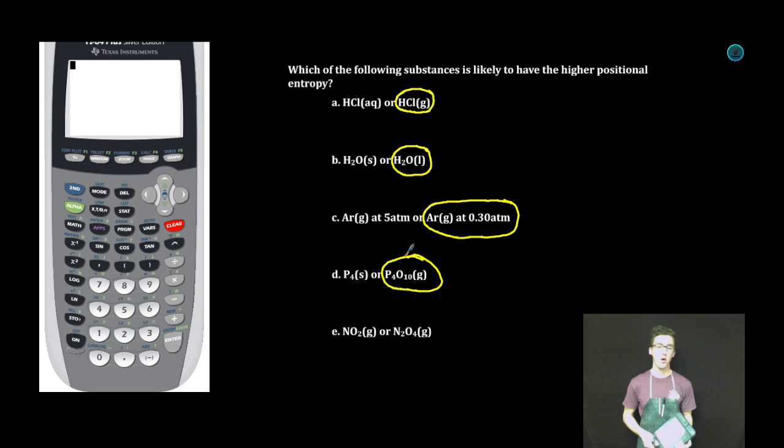Finally, NO2 gas or N2O4 gas. Again, both gases, but here, N2O4, more complex molecule, greater number of electrons, therefore greater or higher entropy.